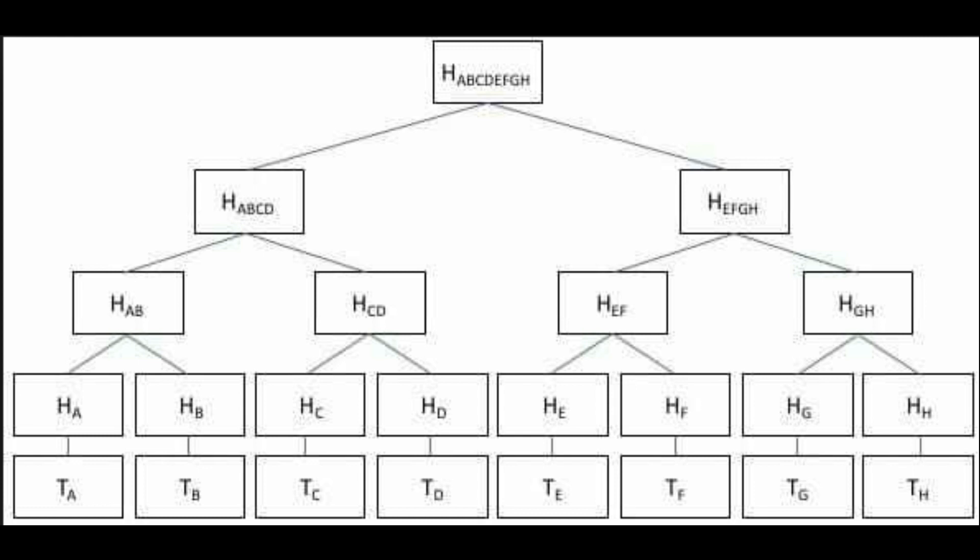So let's say we have this user Terry. We have Terry's posts A through H. You hash each one of Terry's posts, and that gives you the second level where you have hashes of his posts A through H. Once you have a hash of each individual post, you combine the hashes together. From hash A and hash B you get hash AB. From hash C and hash D you get hash CD. From hash AB and hash CD you'll get hash ABCD. And you'll finally end up, once you've combined all the hashes together, with hash ABCDEFGH. This is how the censorship resistance is proved.